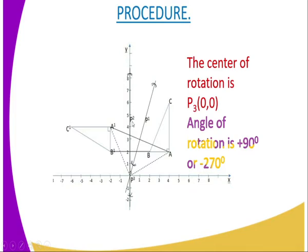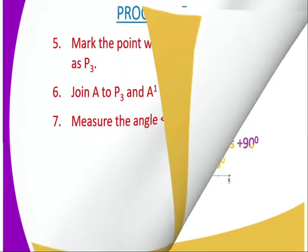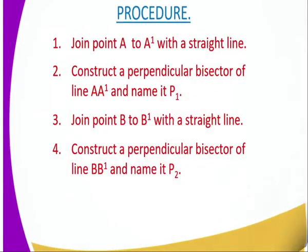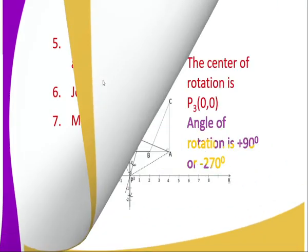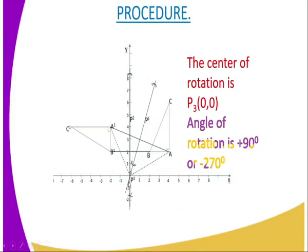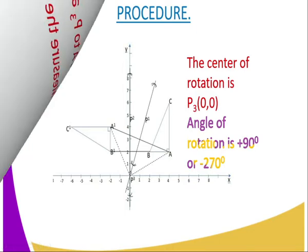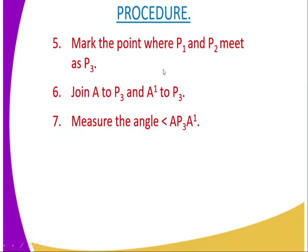Procedure number five: mark the point where P1 and P2 meet as P3. You can see that where the two perpendicular bisectors meet, they meet at (0, 0), and that becomes P3. That is exactly what we have been told to do.